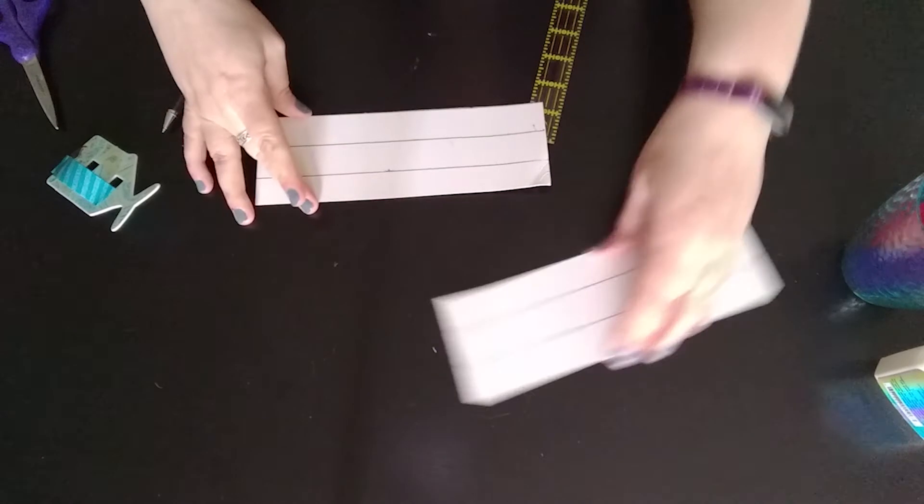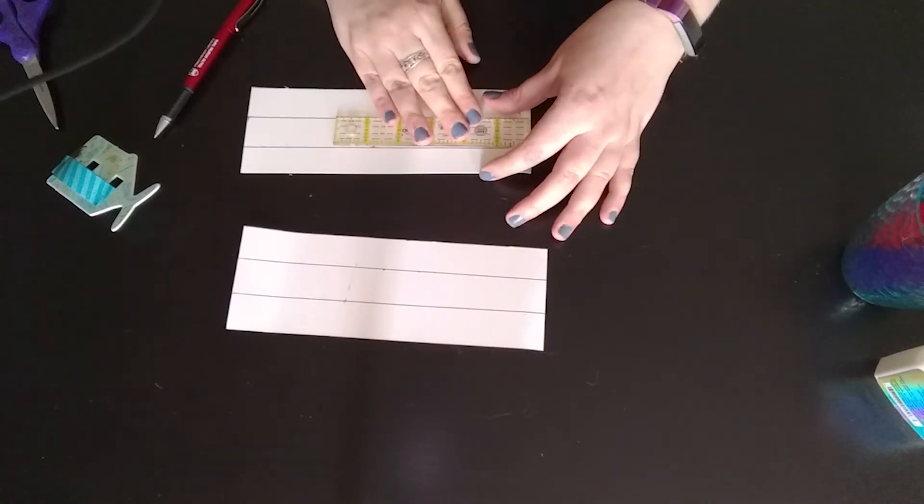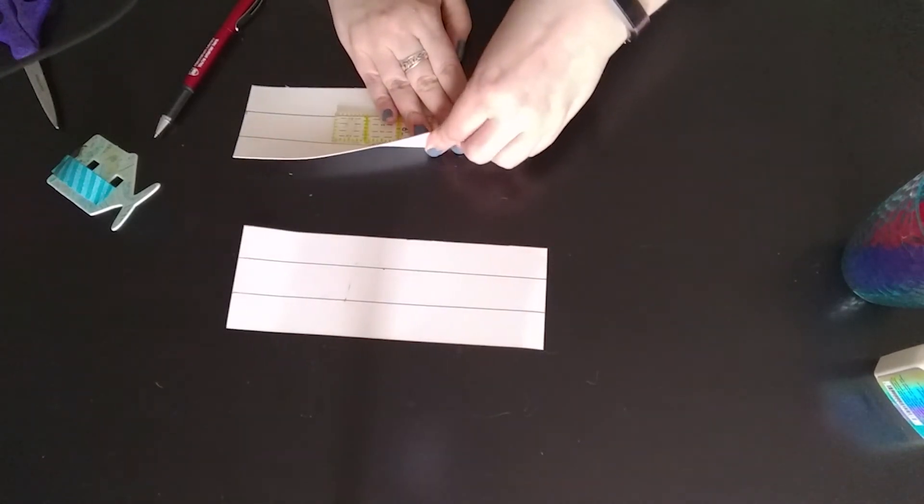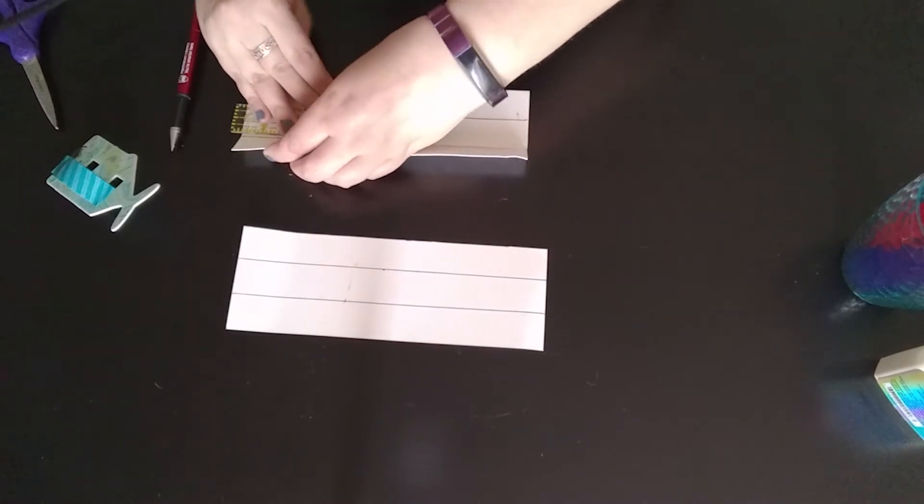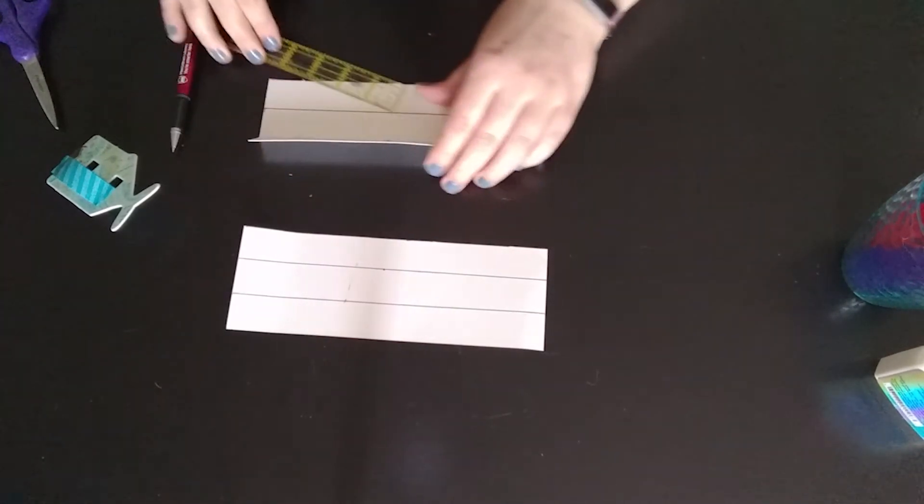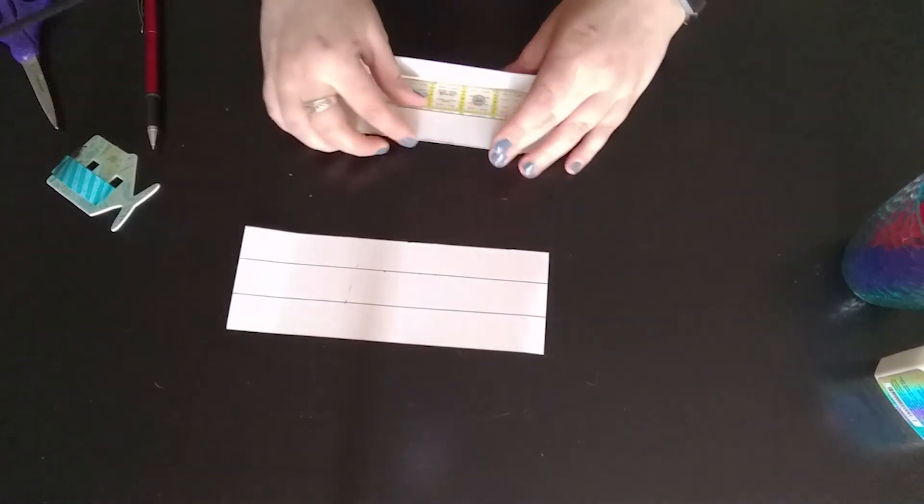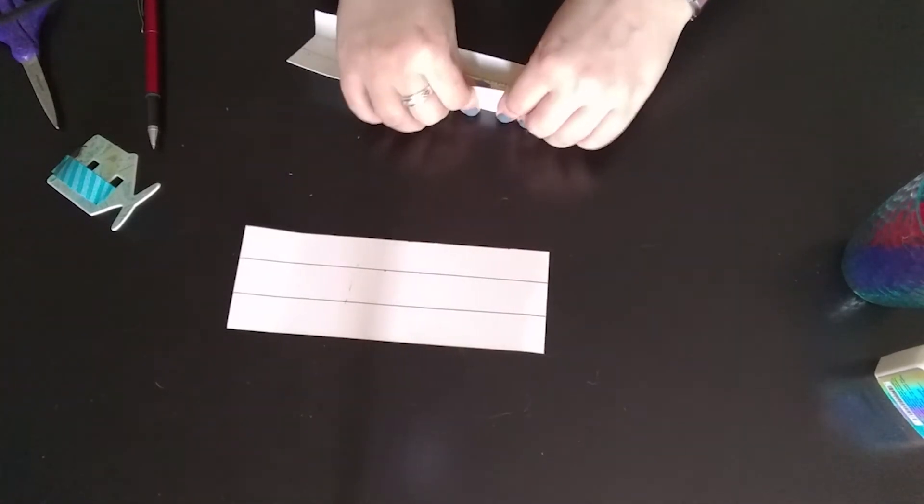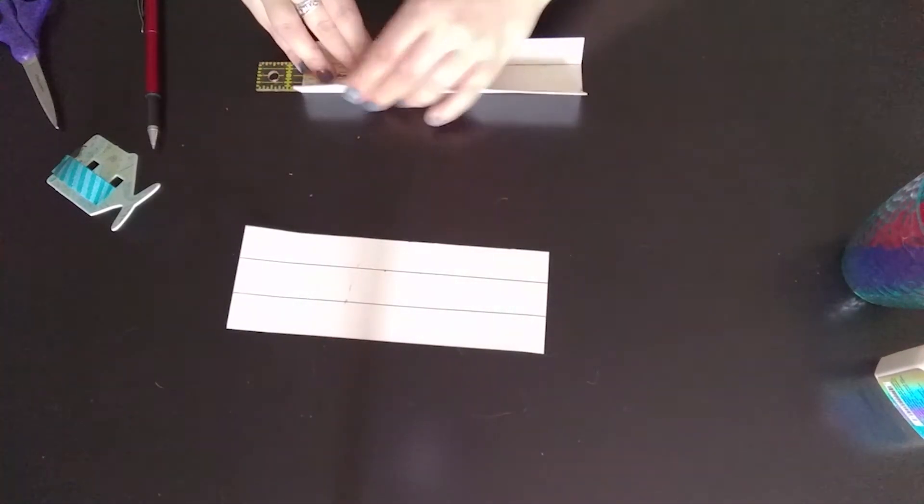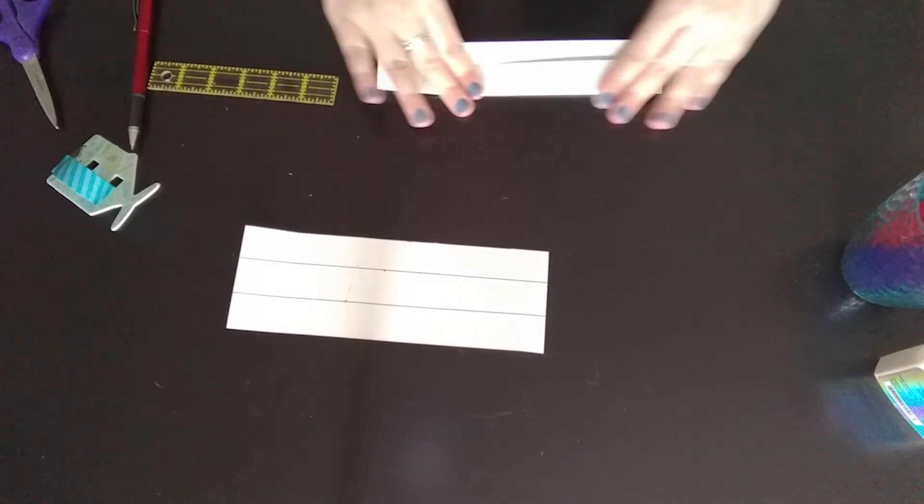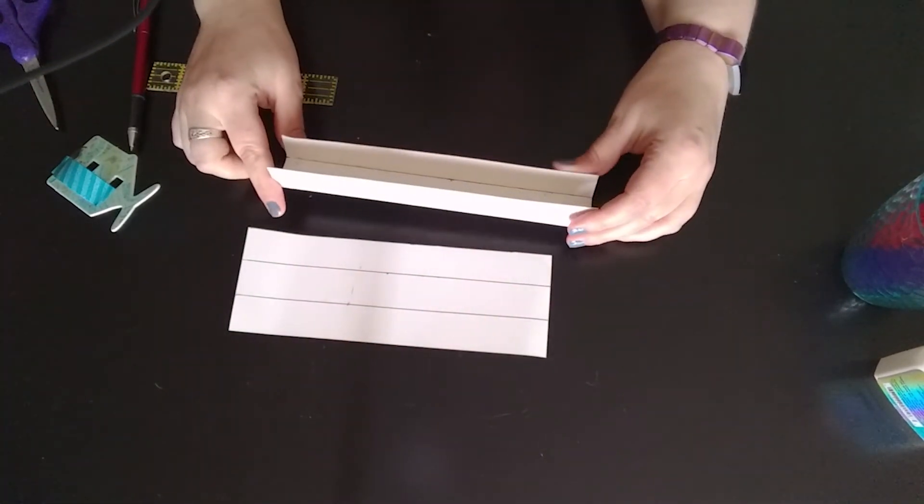So I'll do that on both of my squares of rectangles of paper. There we are. So now I have my two pieces and what sometimes helps is to use the ruler's edge when you're folding up the sides of your rims. There we go. There's one side. And there's the other.